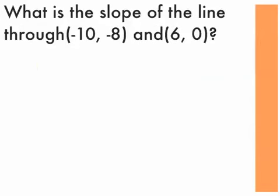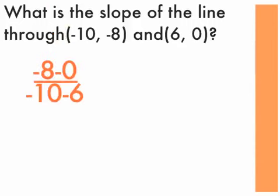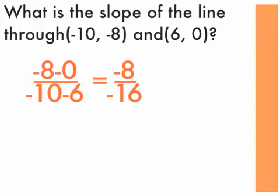The last example asks: what is the slope of the line through (-10, -8) and (6, 0)? The first way: negative 8 minus 0 over negative 10 minus 6. Negative 8 minus 0 is negative 8, and negative 10 minus 6 is negative 16. A negative over a negative is positive, and 8 simplifies into both 8 and 16, so this is positive 1 over 2.